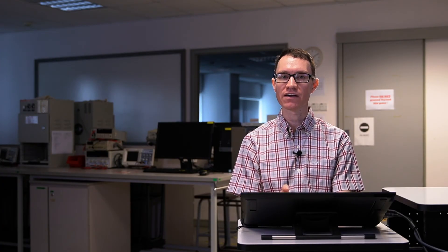So in summary, in order to design an active low-pass Butterworth filter, we need to specify the order of the filter n, the cutoff frequency F sub B. We can then use the equation shown, choose a capacitor, and then find R from it. We can then determine K based on the order of the filter. And then it turns out that we can choose any reasonable feedback resistor. That completes the filter design process.